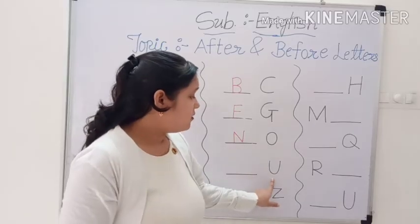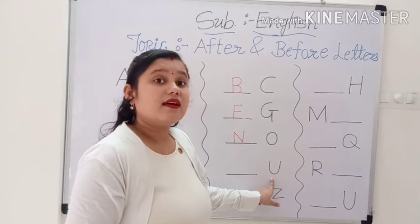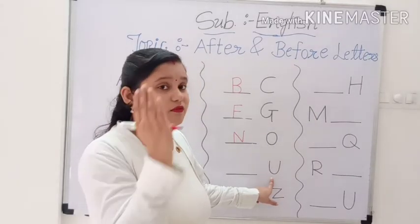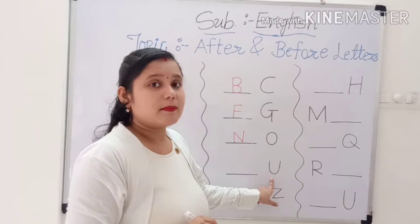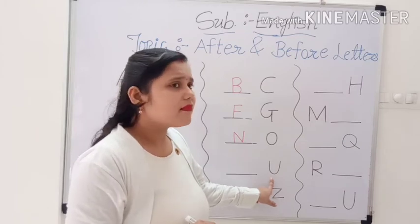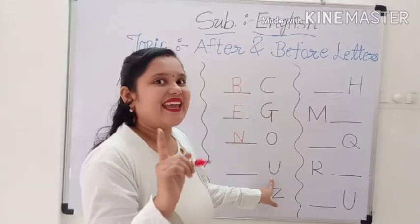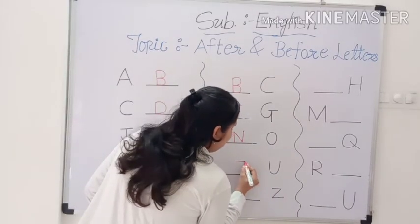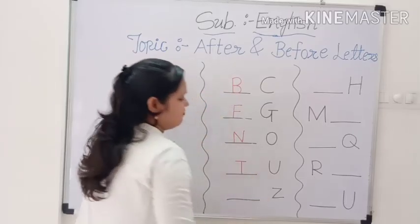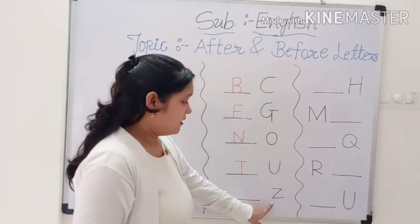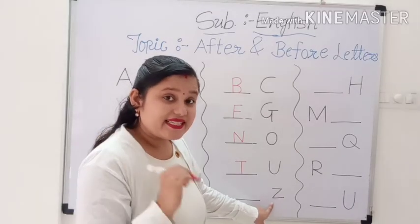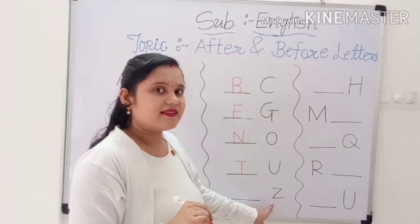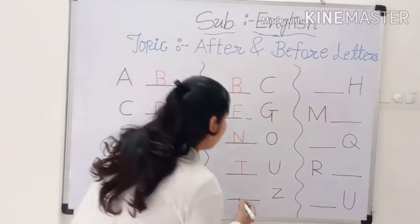Now this is capital letter U. And which letter comes before U? T. Capital letter T. Now this is capital Z. And which letter comes before Z? Y. Very good.